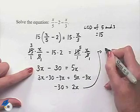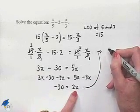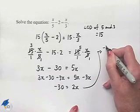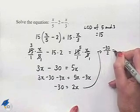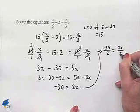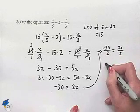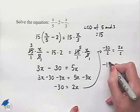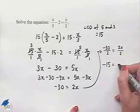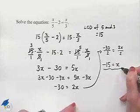We can now divide both sides of the equation by 2, which is the coefficient of x, in order to isolate our x value. And we come up with negative 30 divided by 2 is negative 15, and 2x divided by 2 is x. And here's our solution.